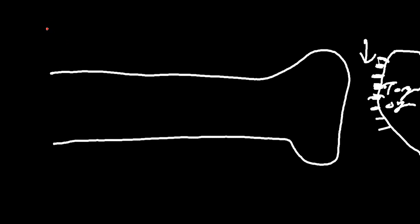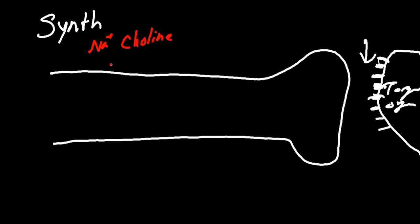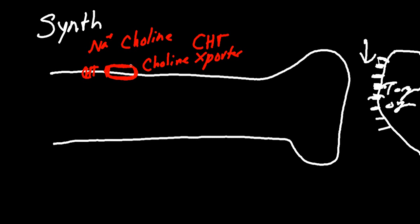Let's talk about acetylcholine synthesis. Synthesis is going to start with sodium outside the neuron, and we're also going to have choline outside the nerve. These two will be brought into the axon via a transporter called the choline transporter, abbreviated CHT. This channel can be inhibited, and we'll go over that in a little bit.